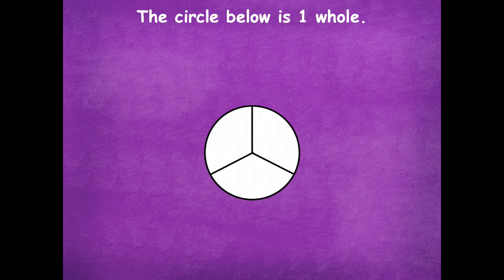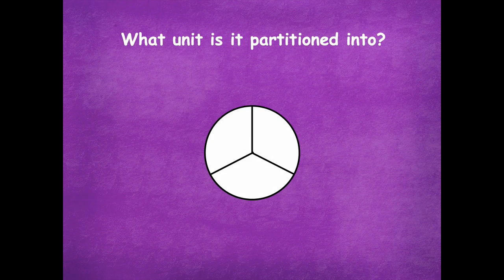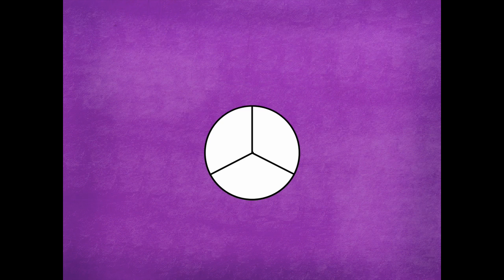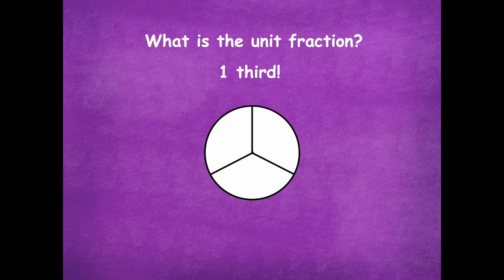The circle below is one whole. What unit is it partitioned into? Thirds, because there are three equal parts. What is the unit fraction? One-third, because we're talking about one of the parts.